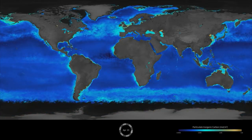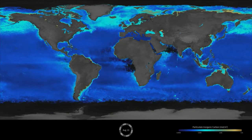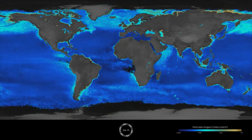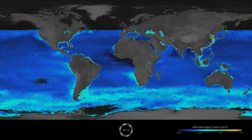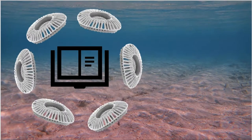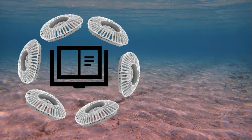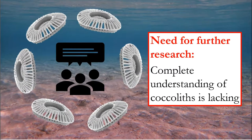Coccolithophore blooms appear in this way due to their coccoliths, which act as microscopic mirrors reflecting light and brightening the ocean. Numerous studies have been conducted on these coccoliths; however, a complete understanding of the benefits they provide to coccolithophores is lacking.